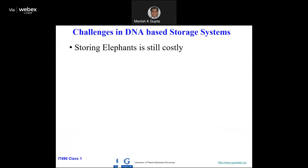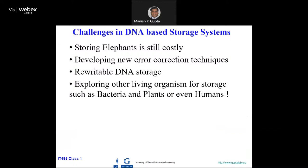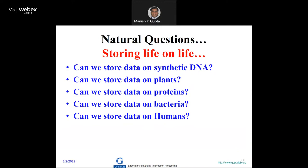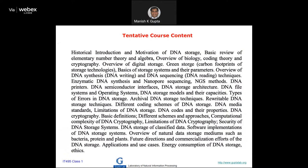The challenges are: it is still a little bit costly, developing error correction techniques and new algorithms for reliable DNA storage, and exploring other living organisms. Bacteria we have tried, and somebody has done experiments with plants also — you can store data on your plants and retrieve whenever you want. The course content tentatively covers sequencing technology, architecture, cryptography, and security towards the end.